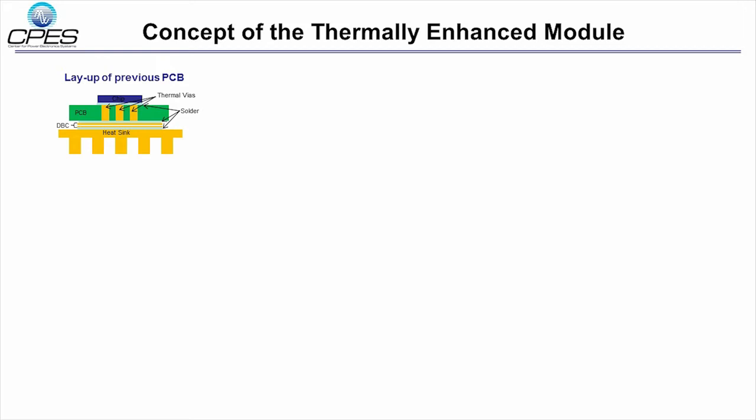The previous version of PCB with thermal vias had thermal path from junction to heat sink through thermal vias. This method showed limitations for providing good thermal path to dissipate excessive heat flux from the chip.